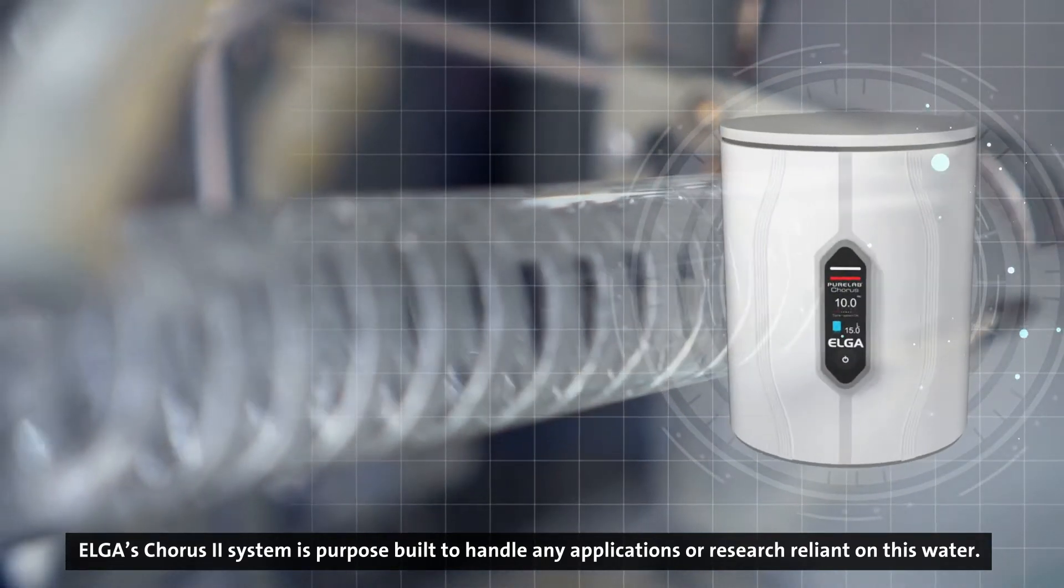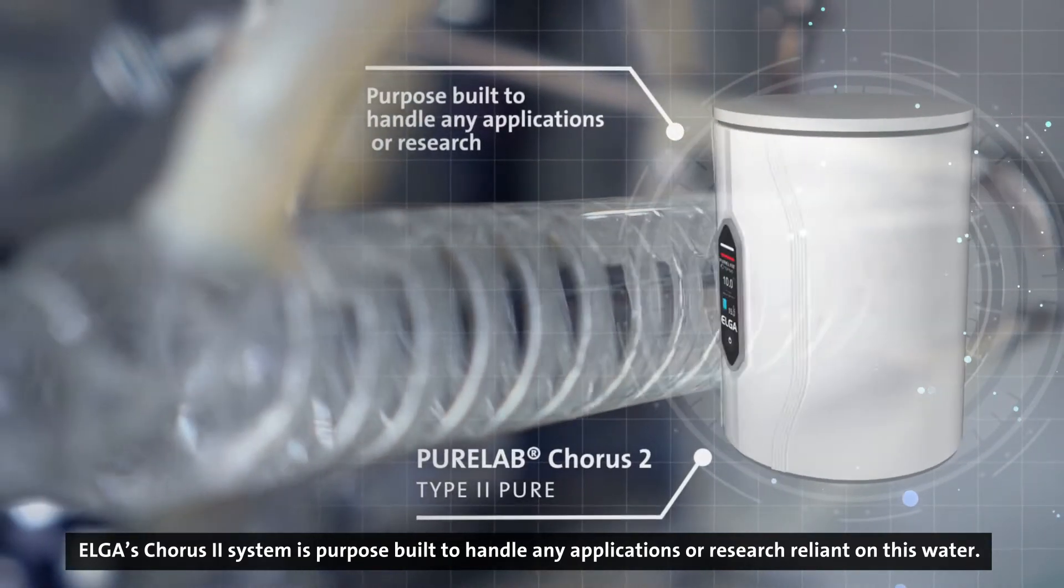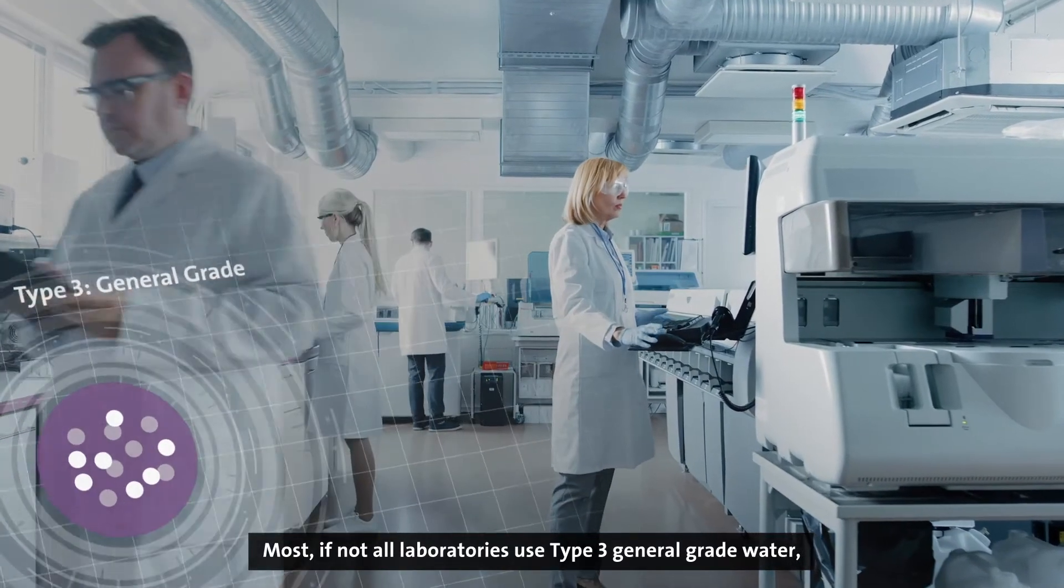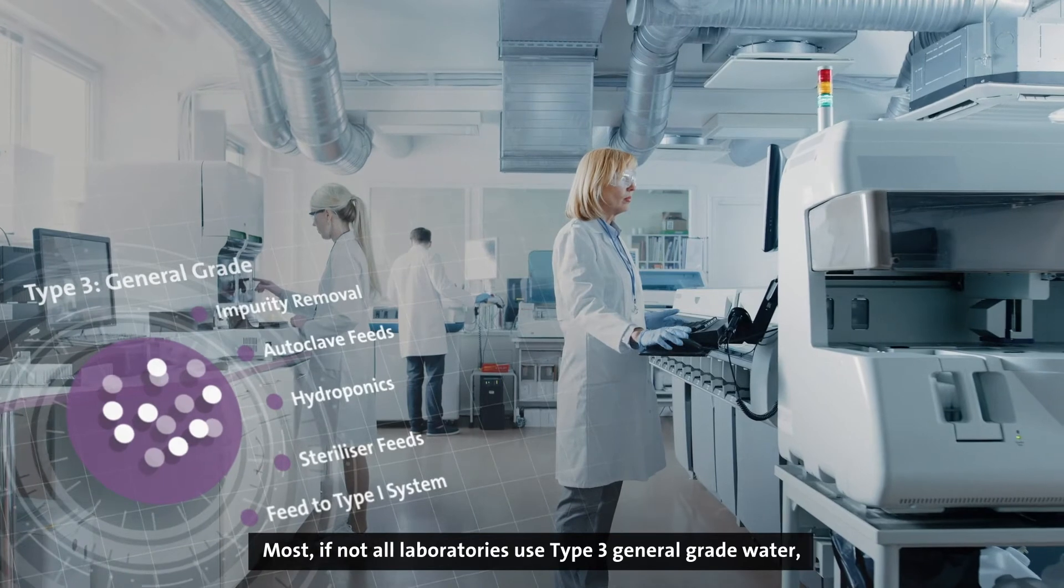Elga's Chorus 2 system is purpose-built to handle any applications or research reliant on this water. Most, if not all laboratories, use type 3 general grade water.